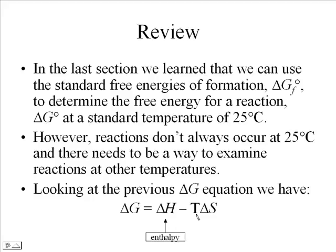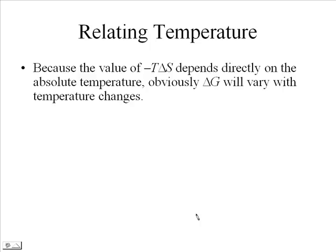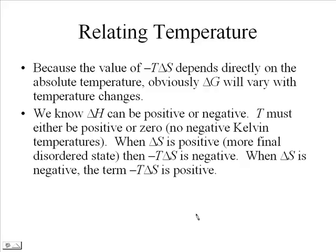We know that delta H is enthalpy and delta S is entropy. Because the term negative T delta S depends directly on the absolute temperature, the free energy change is going to vary when the temperature changes.